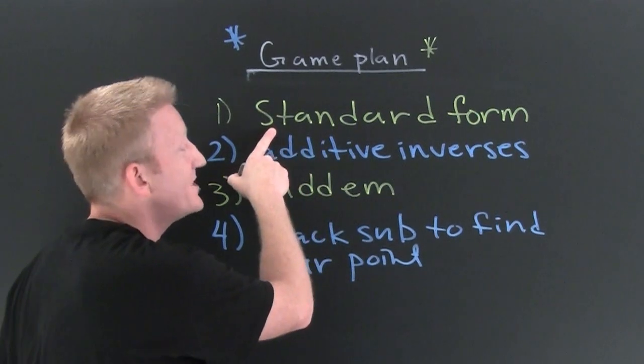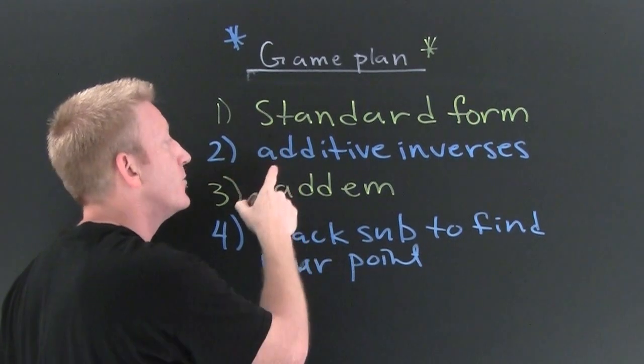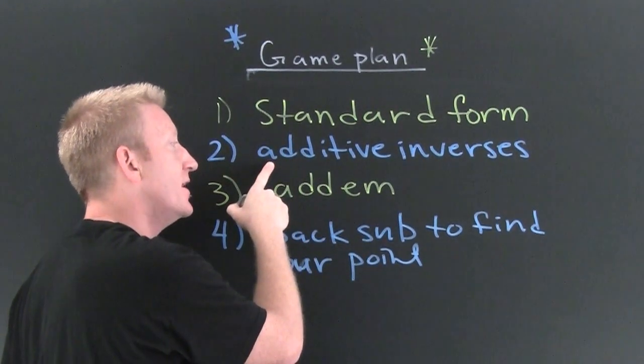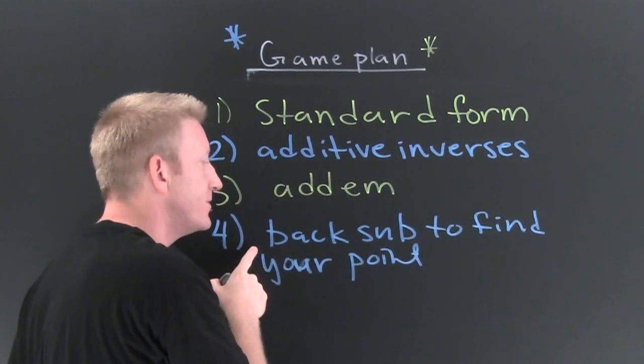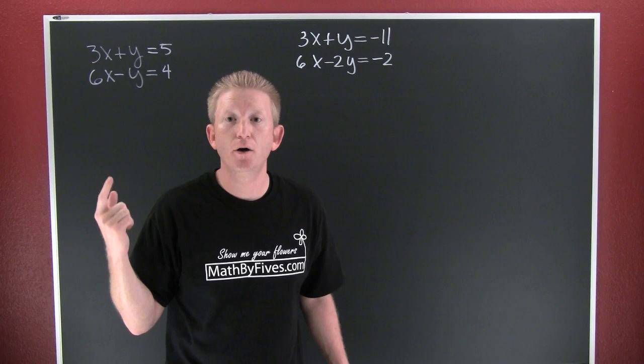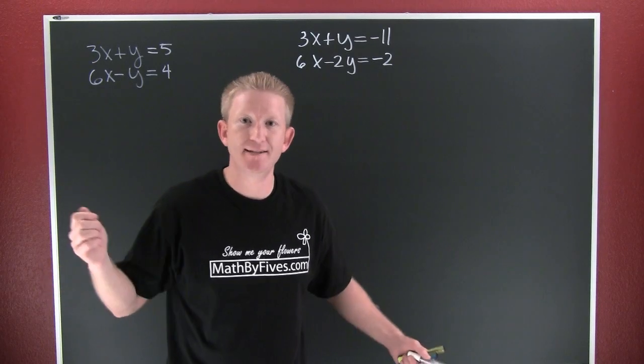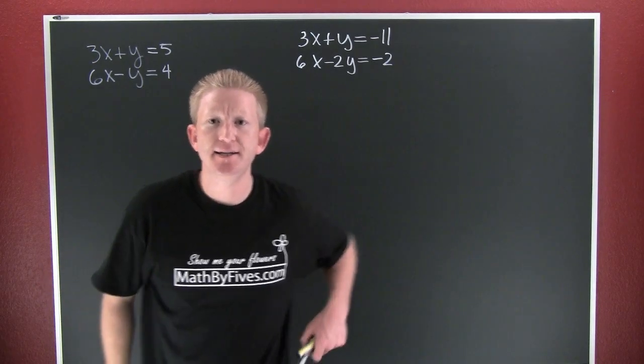First, we're gonna get our two equations in standard form. Then, we're gonna find additive inverses. Then, back substitute to find your points. Okay, now that we got the game plan set in place, let's go ahead and hit an example.